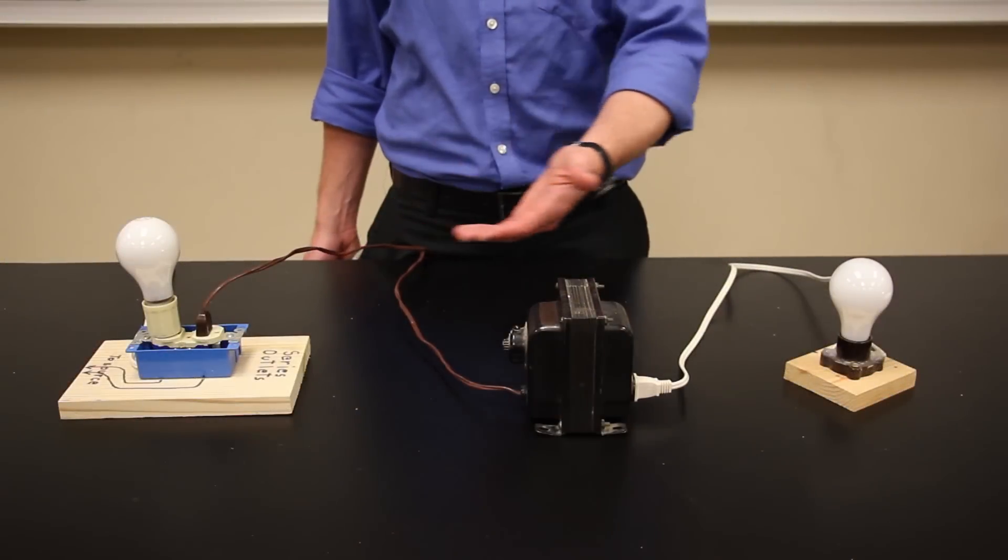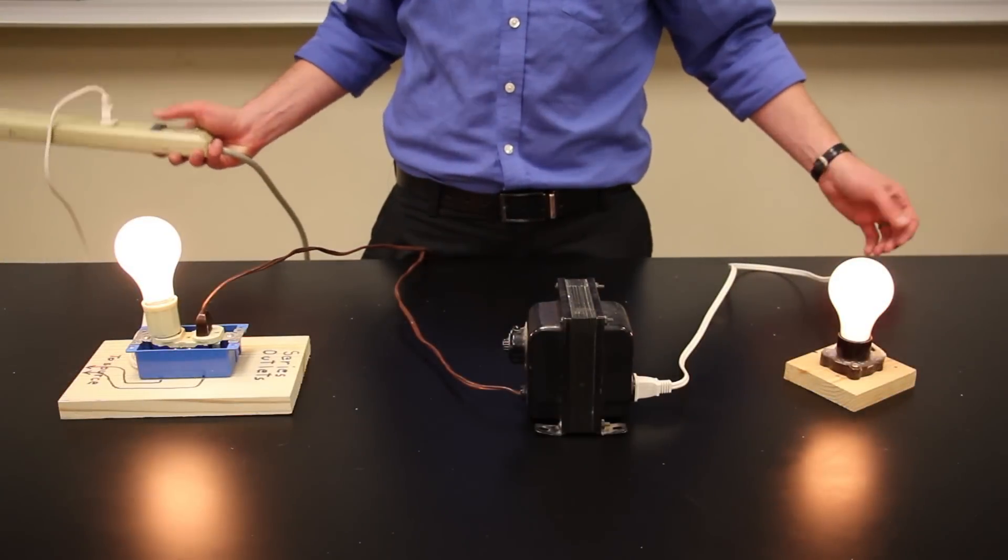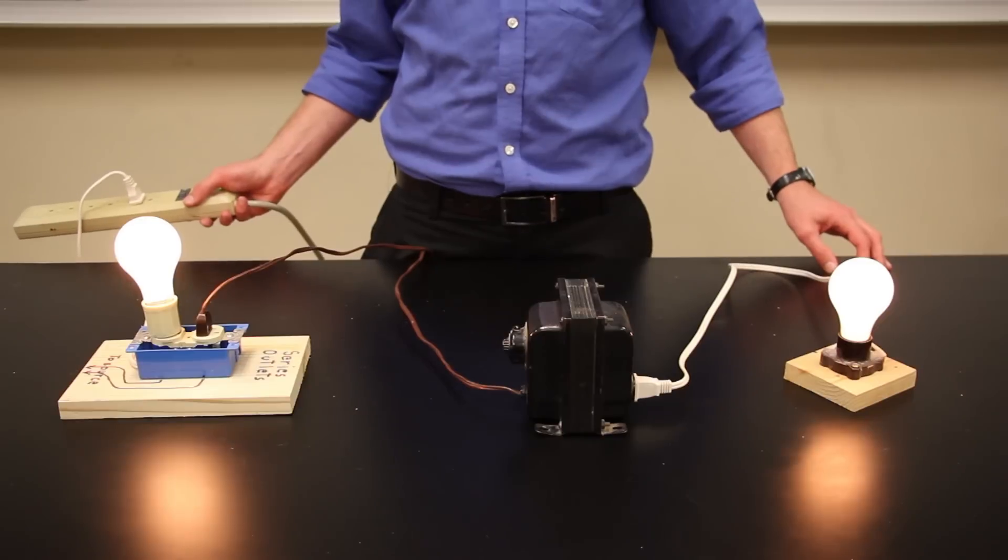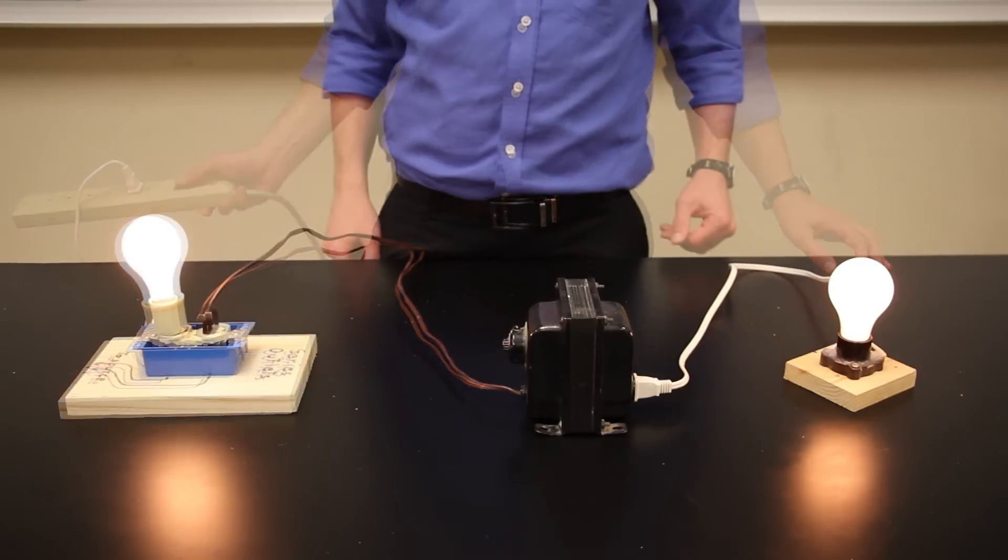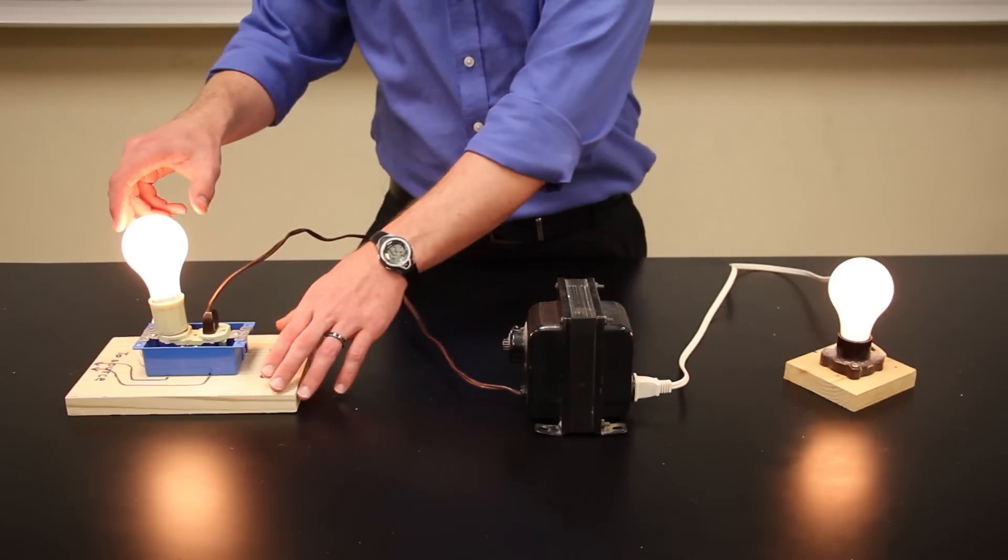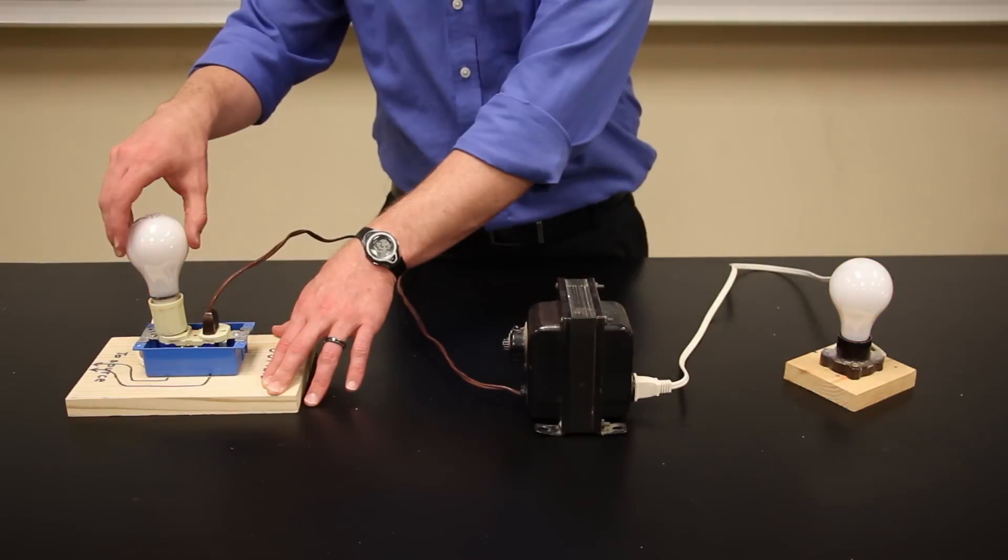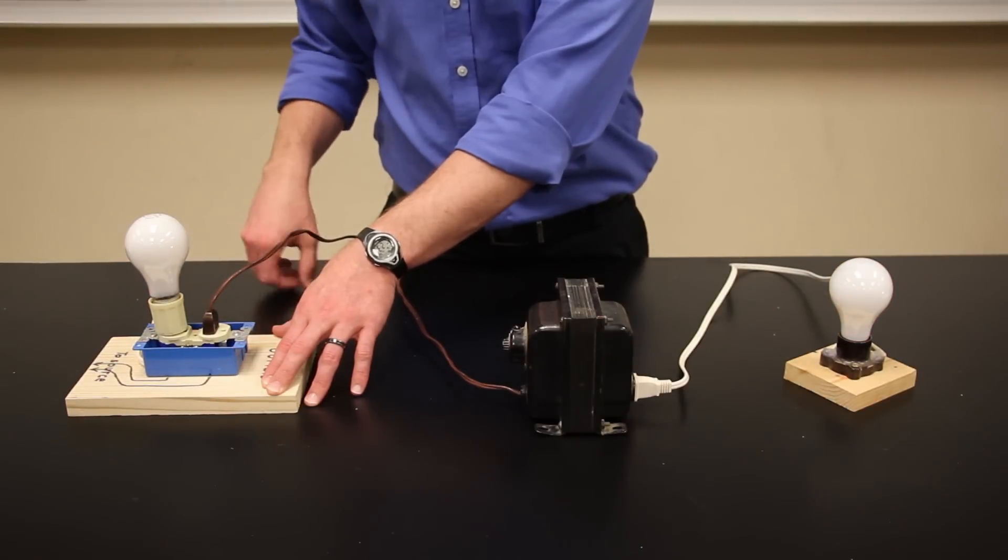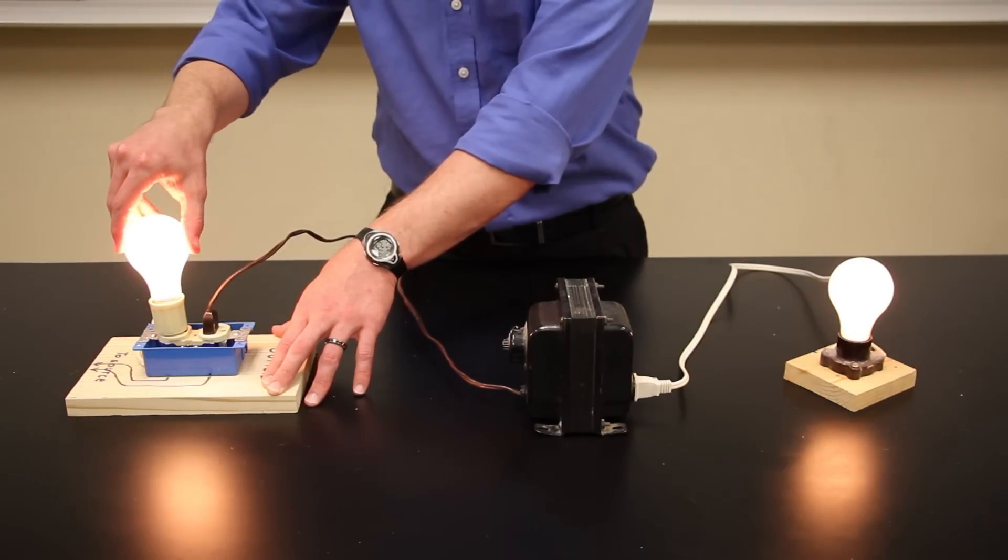Here's the same setup in real life. As you can see, both bulbs glow. Now, what do you think will happen if I remove the bulb in the primary circuit? No real surprise there. I cut the power to the whole thing, like opening a switch.